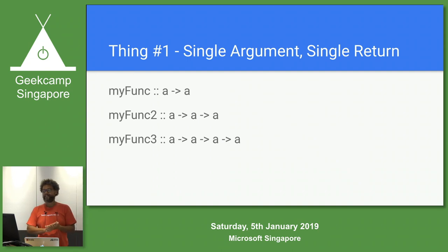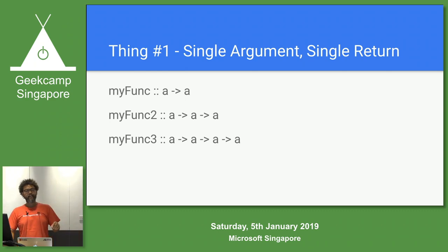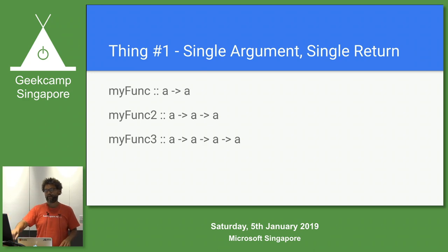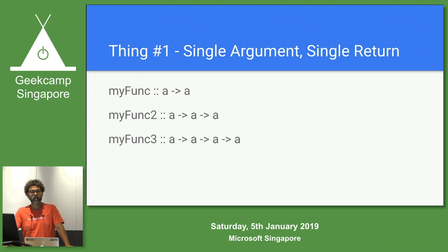Thing number one: in Haskell, functions all have a single argument and a single return. It returns one value and always takes one argument. There is no function in Haskell that takes more than one argument ever — there's a clever way Haskell gets around it. If you look at the first line, 'my_func' — that's a type declaration, a very loose type declaration for a function. This code won't compile, but it's close enough that you get the idea. It says that my_func takes one argument of type A and returns another value of the same type A. The A's are placeholders called type variables.